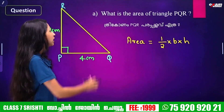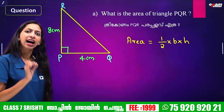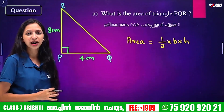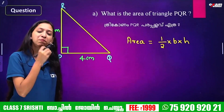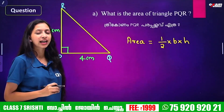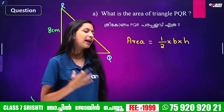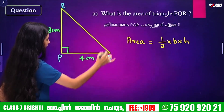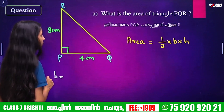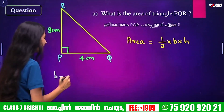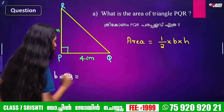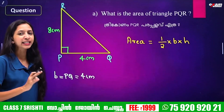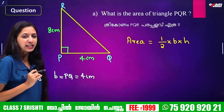This is the right triangle. We are going to identify the base and height. The base in this shape is PQ. PQ is 4 cm. So we have B equal to 4 cm.